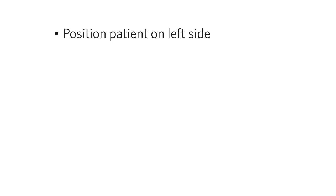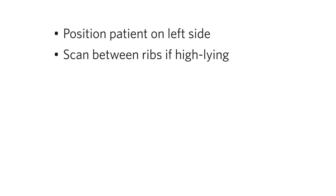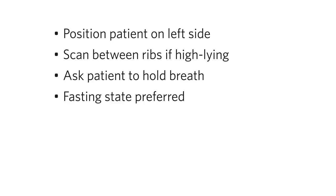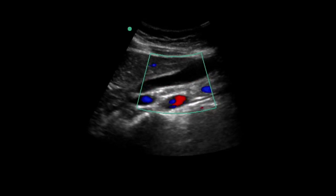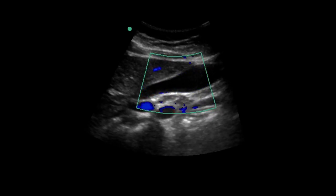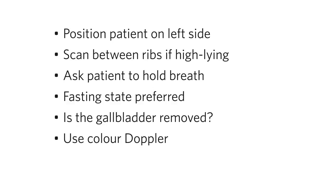If you're having trouble identifying the gallbladder, try positioning the patient on their left side. Consider a high-lying gallbladder, in which case you will have to scan between the ribs. You can also ask the patient to hold a deep breath, as this will shift the gallbladder down and into the field of view. If the patient has recently eaten, the gallbladder may be contracted and very difficult to image — if possible, wait several hours and repeat the procedure when the gallbladder contains more bile. Ensure they haven't had their gallbladder removed, otherwise you'll waste a lot of time. To help differentiate the gallbladder from a vessel like the IVC or portal vein, you can use color Doppler to confirm that there is no flow in the suspected sac. Since this can be an uncomfortable exam, don't hesitate to give analgesia — you will then be able to gently push in the right upper quadrant and generate a better image.